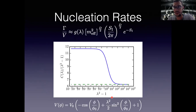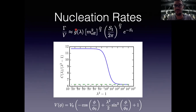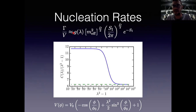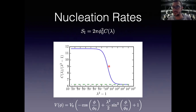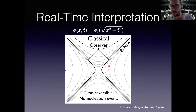Using the Euclidean formalism we can compute the expected bubble nucleation rate. I've pulled out some dimension-full factors, and there's an order-one function g associated with the fluctuation determinant. Working in 1+1 dimensions, I compute a coefficient C numerically for various values of λ, giving a very nice curve that provides a prediction for the decay rate we expect to see.